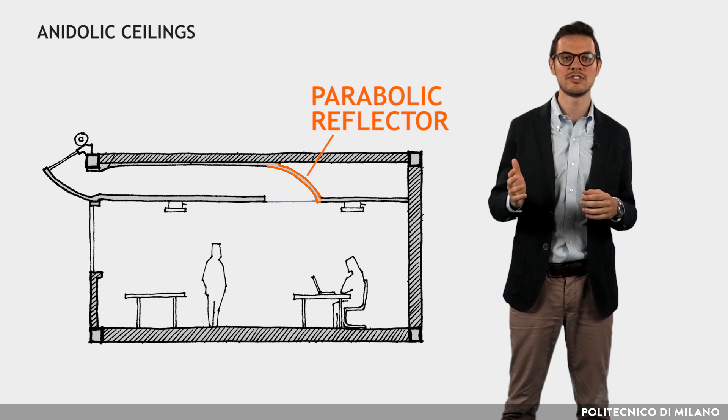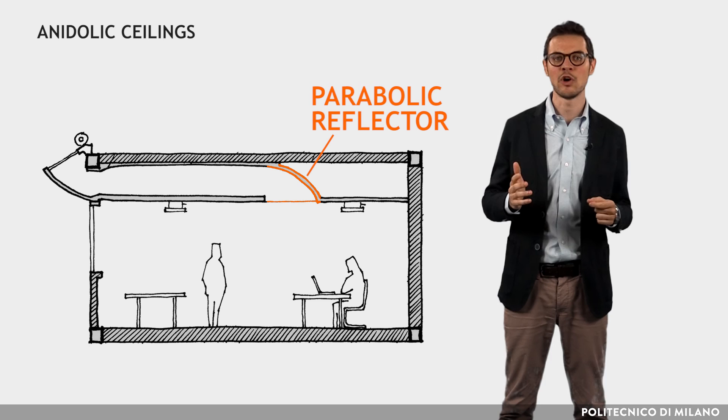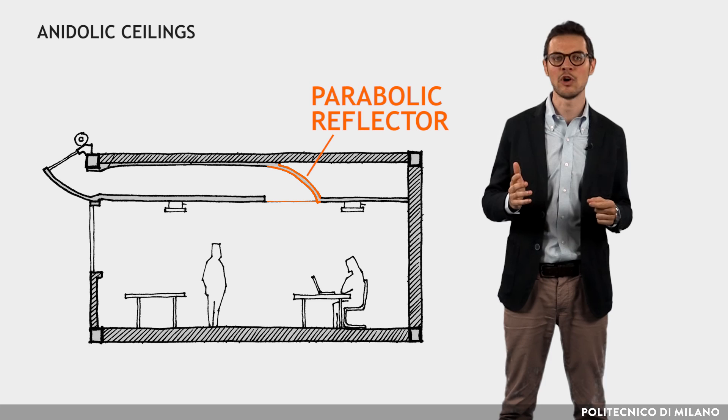In correspondence of the outlet of the duct, a parabolic reflector distributes light in the bottom. On a clear day, the penetration of direct sunlight can be controlled by roller blinds that unfold above the outer glass of the opening.